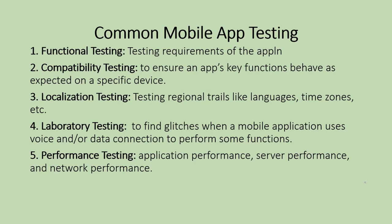For localization testing, for example, if there is an app installed in a particular country, you check the time zones, languages, currencies, and local area usage. The fifth type is Performance Testing — this checks the application performance individually. If there is no server, network, or device issue, performance testing checks how many users can use the application at a time. If there is a particular load and a crash or network problem occurs, you can check it through performance testing.